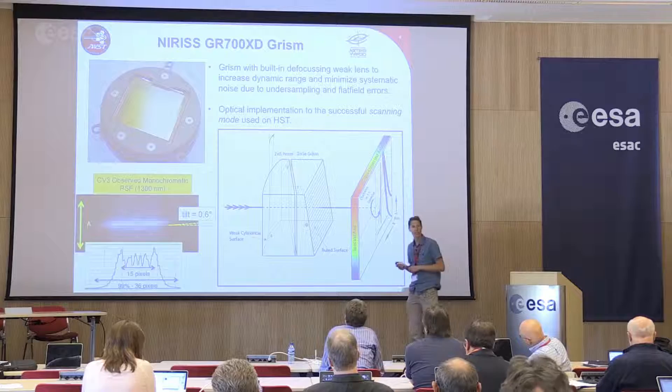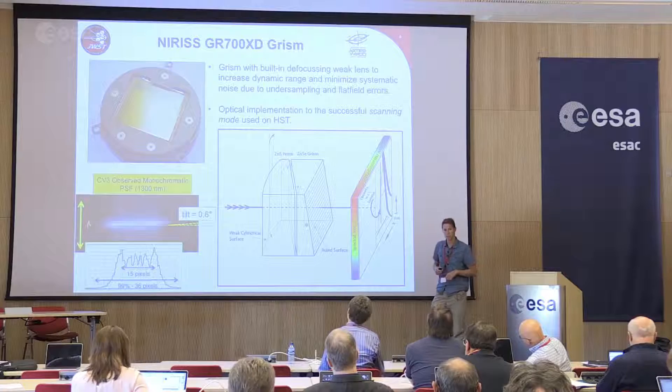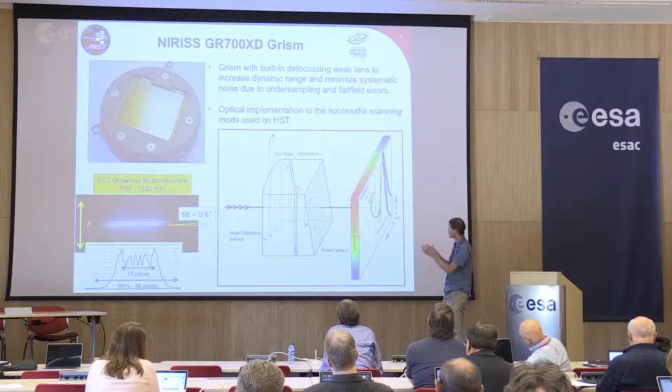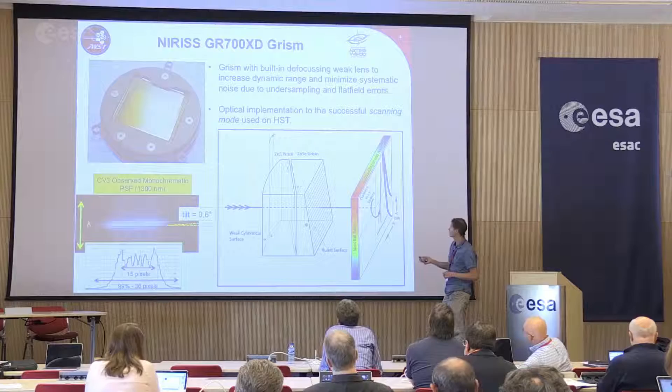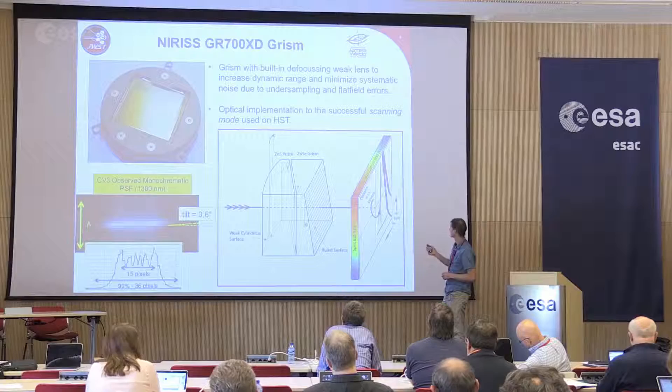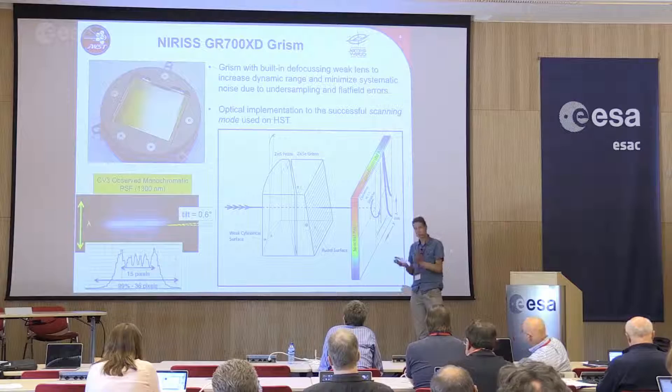This is similar to the scanning mode used on HST for exoplanet observations, where you let the star spectrum drift across the field during the observation to put the spectrum onto more pixels. Here we just spread out the light using this weak cylindrical lens. Then the light comes through and it gets dispersed by the grism, and you get these traces that I'll show you in more detail later.